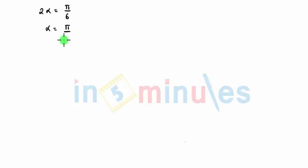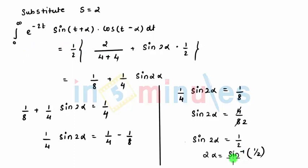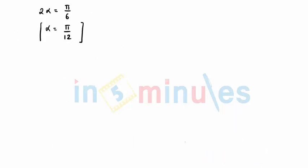So alpha comes to be pi by 12 because sin inverse of half is 30 degrees. So we can write as pi by 6 and 2 gets multiplied with cross multiplication that comes to be pi by 12.